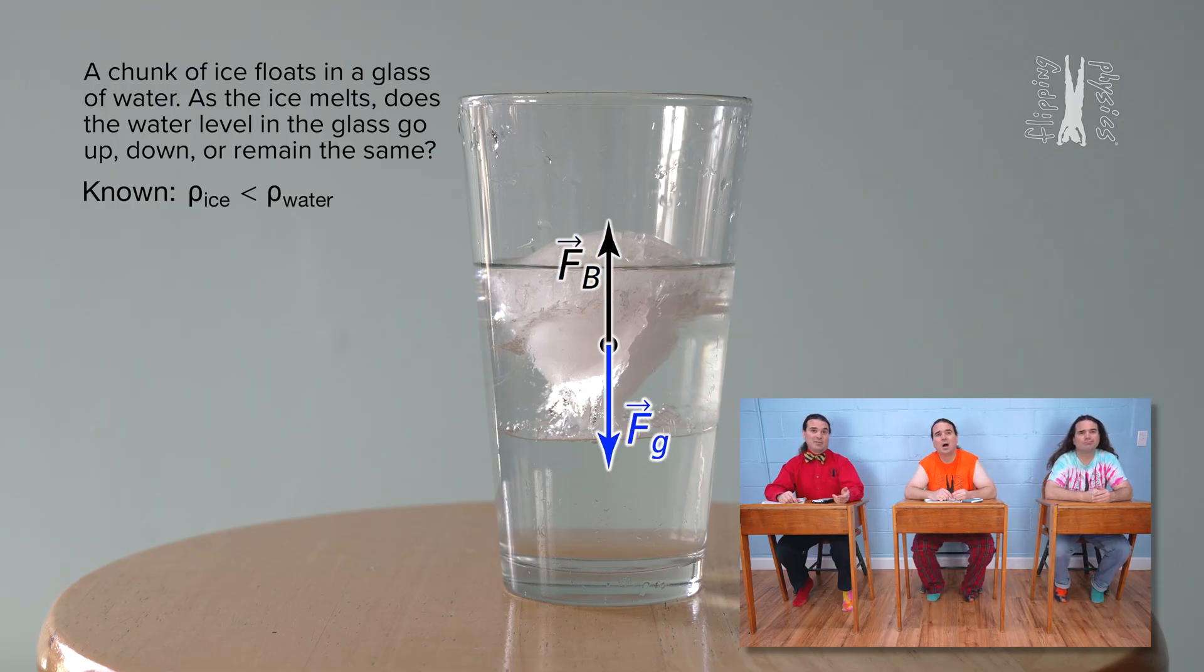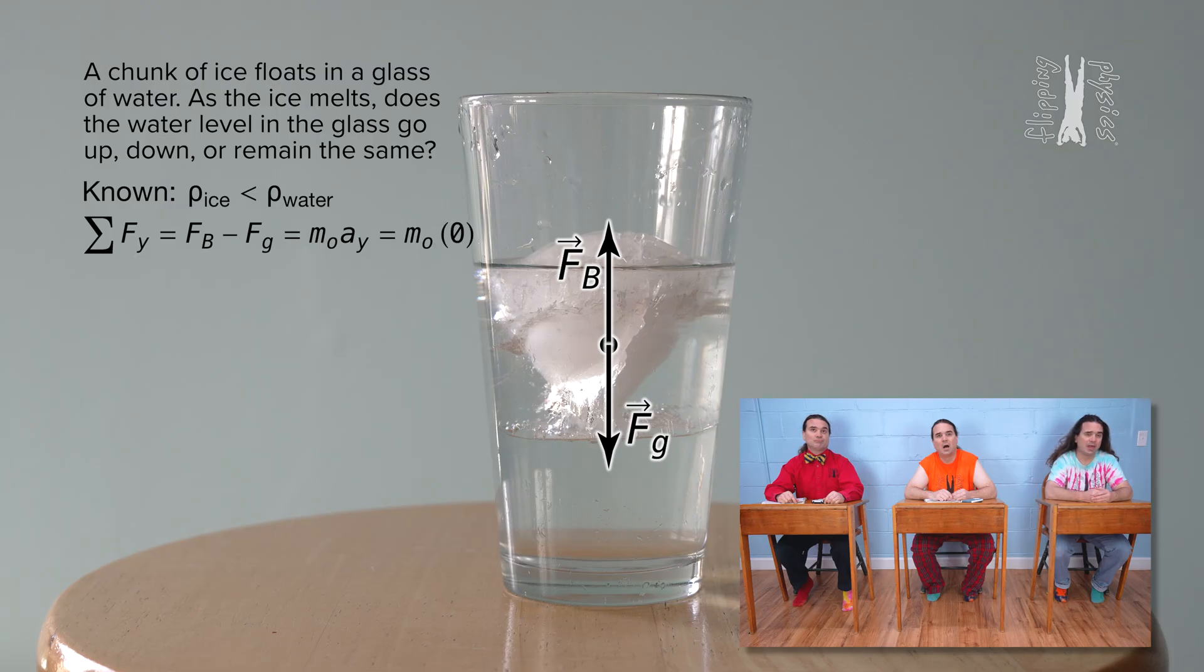That means the net force in the y direction equals buoyant force minus force of gravity. And net force equals mass of the object, or the chunk of ice, times acceleration in the y direction. And the ice is not moving, so the acceleration of the ice in the y direction equals zero. That means the buoyant force equals the force of gravity.